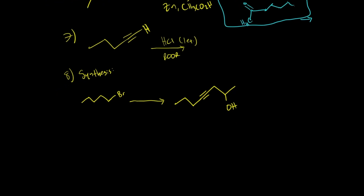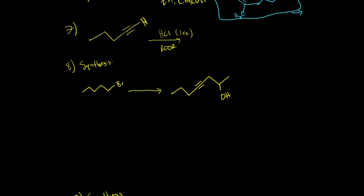Let's move on to number seven. We have HCl and ROOR. Anytime you see HBR and ROOR, you should be thinking anti-Markovnikov. But we know HBR is the only one that can go through either Markovnikov or anti-Markovnikov. Since I see HCl, we can neglect this ROOR and assume we're going to put our chloride on the more substituted carbon. So I have one, two, three, four, five carbons — I'm going to keep my double bond off of number four and put a Cl group on number four. We only have one equivalent, so we'll stop there.